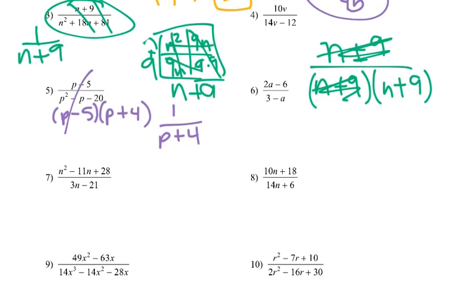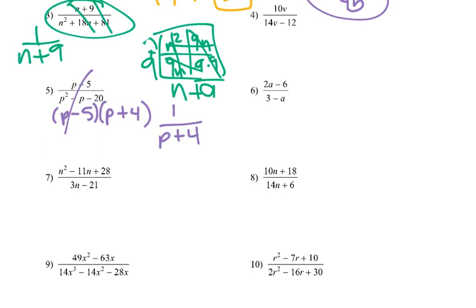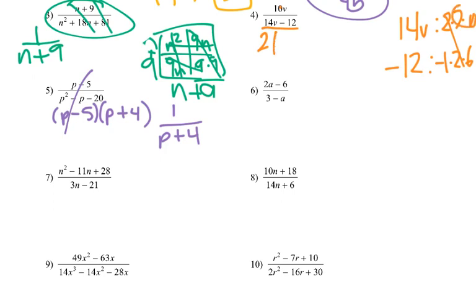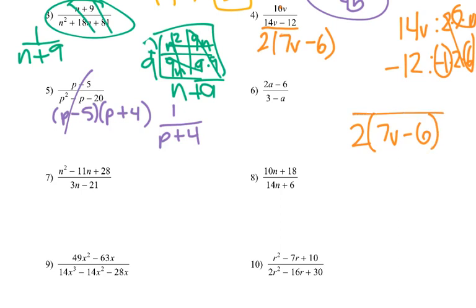Now let's take a look at 4, 6, and 8. On these ones, you're going to see how you can simplify the bottom. So if I have 14v and negative 12, I can think of it like this: 2 times 7 times v, and negative 1 times 2 times 6. So I could pull out a 2 — and I'd be left with 7v and then negative 6. So my bottom is 2 times 7v minus 6. The top 10 could be 2 times 5v. So we eliminate the 2's, giving us 5v over 7v minus 6.